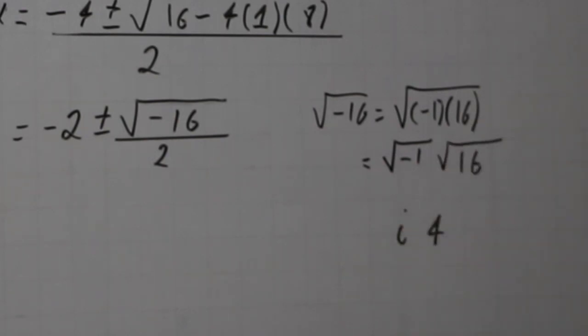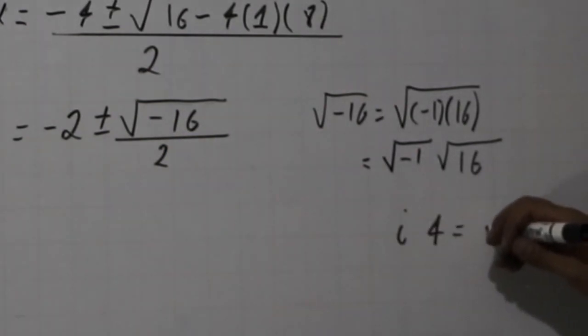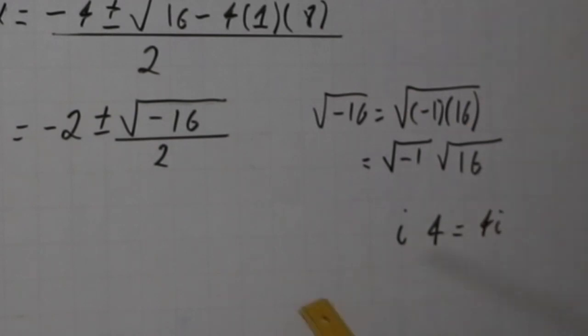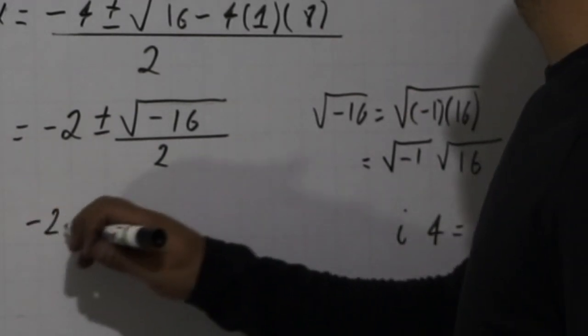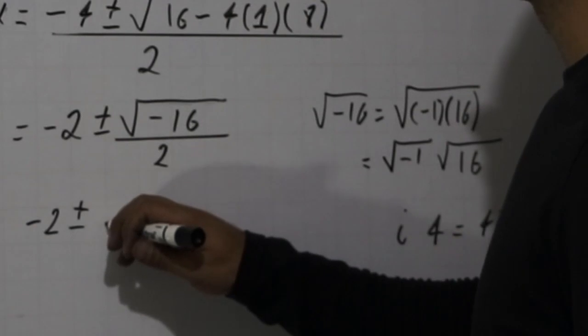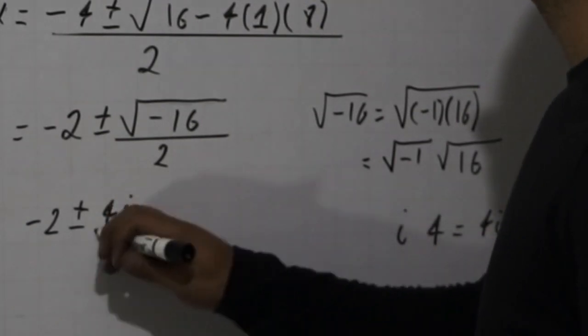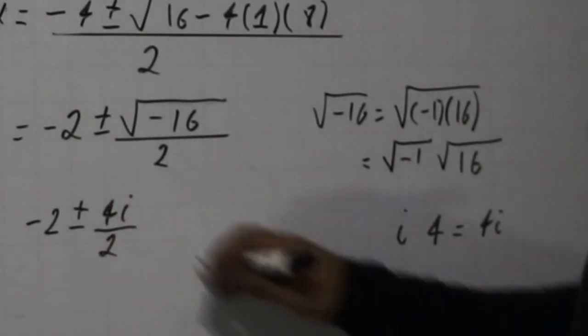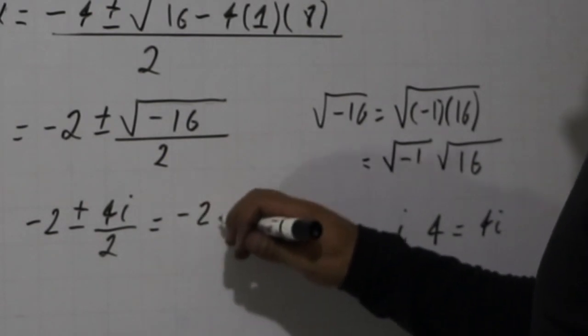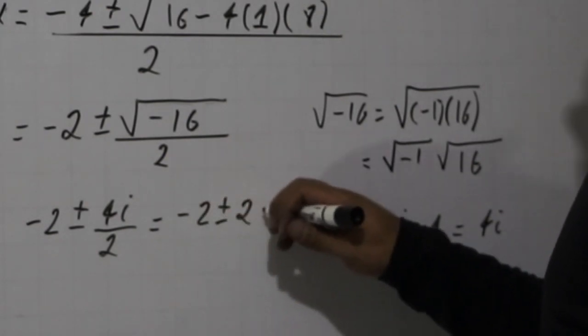Actually, there's another root that would be ± i, but remember, in the formula we already have that sign, so we only need this part, and actually we write 4i. Then we have (-2 ± 4i) / 2, and that would be -2 ± 2i.